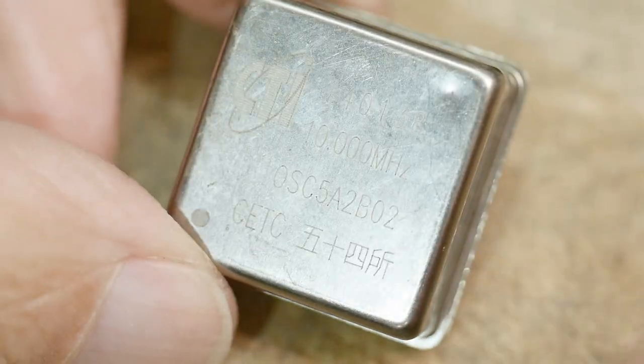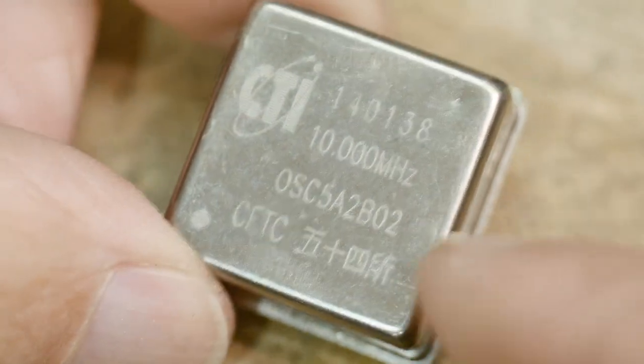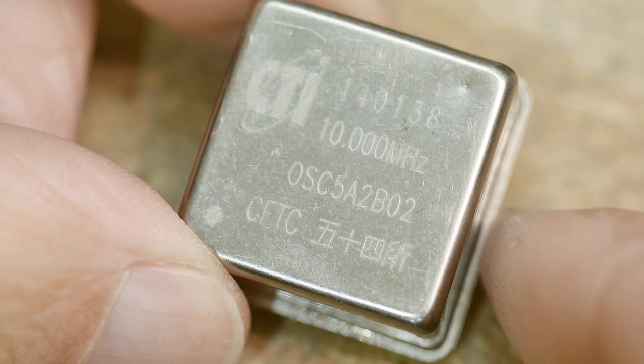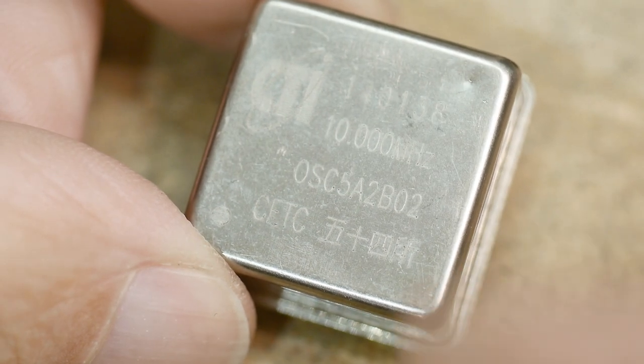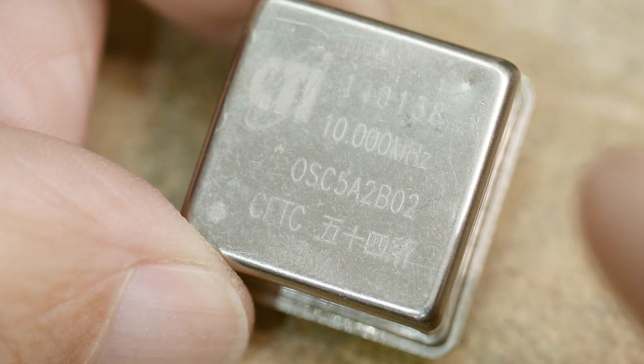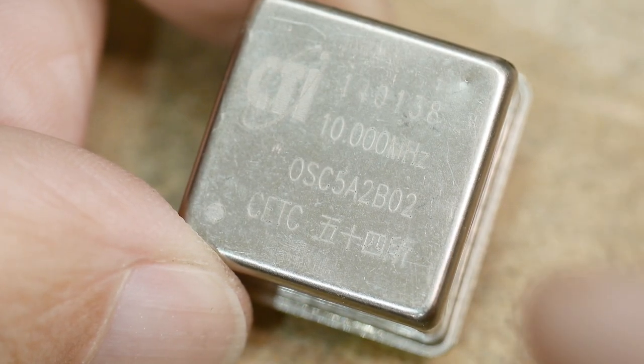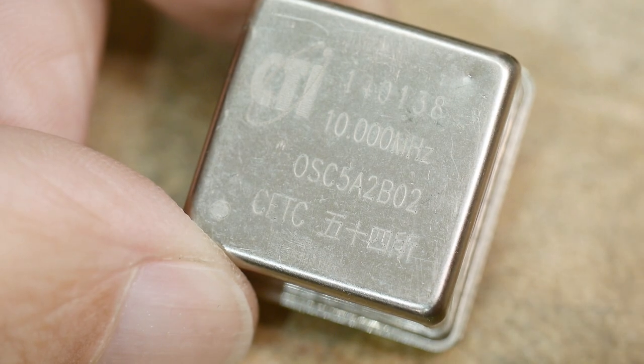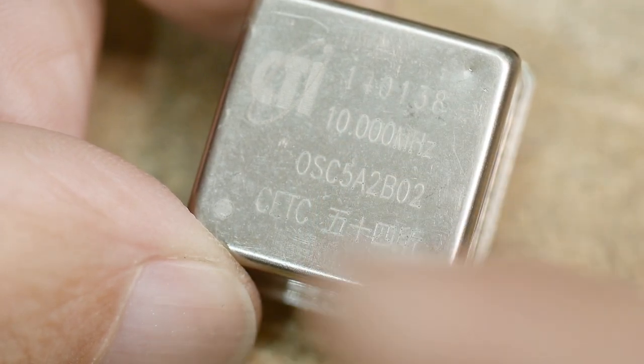There's boards available that use an oscillator like this and then that adjustment pin is actually run by a DAC. And the calibration routine is that you give it a rubidium 10 megahertz on the input, and then it adjusts this and zero beats it by changing the DAC values.